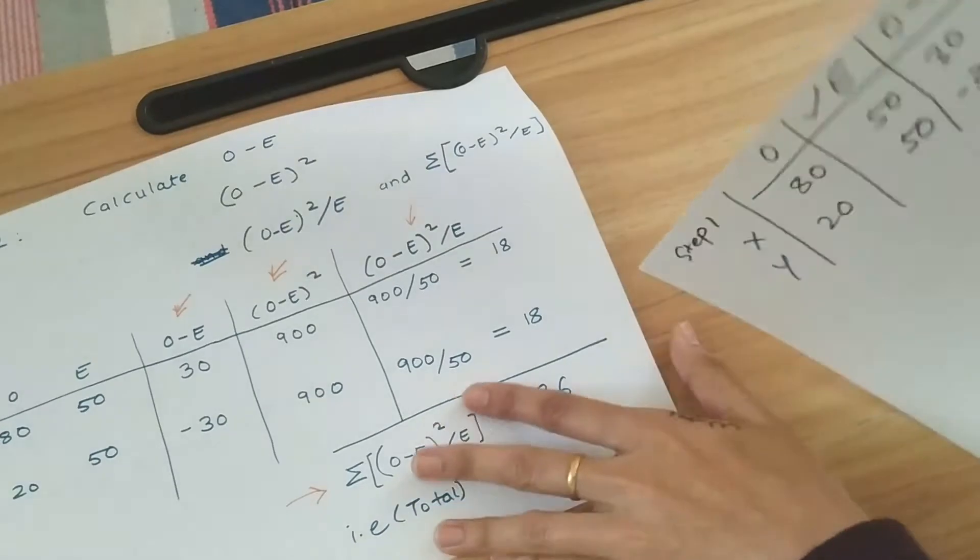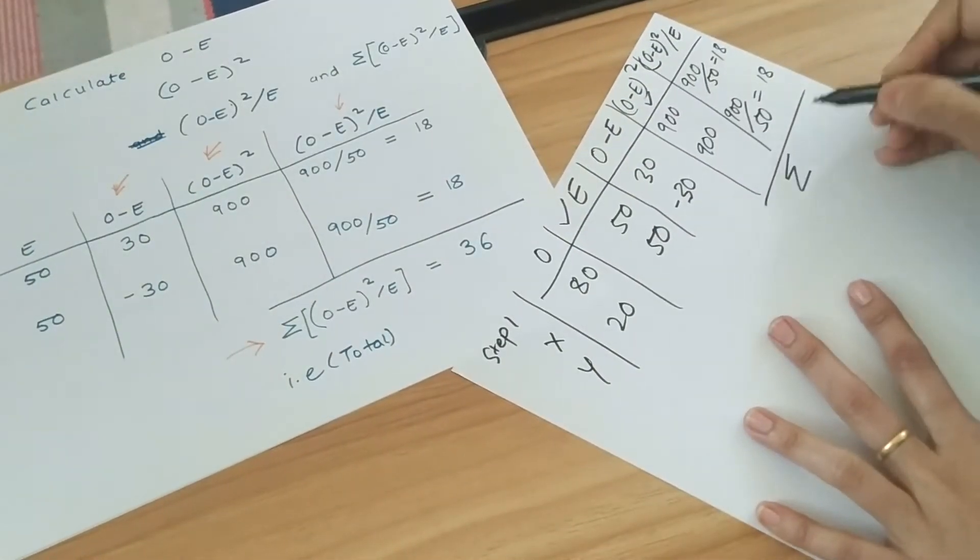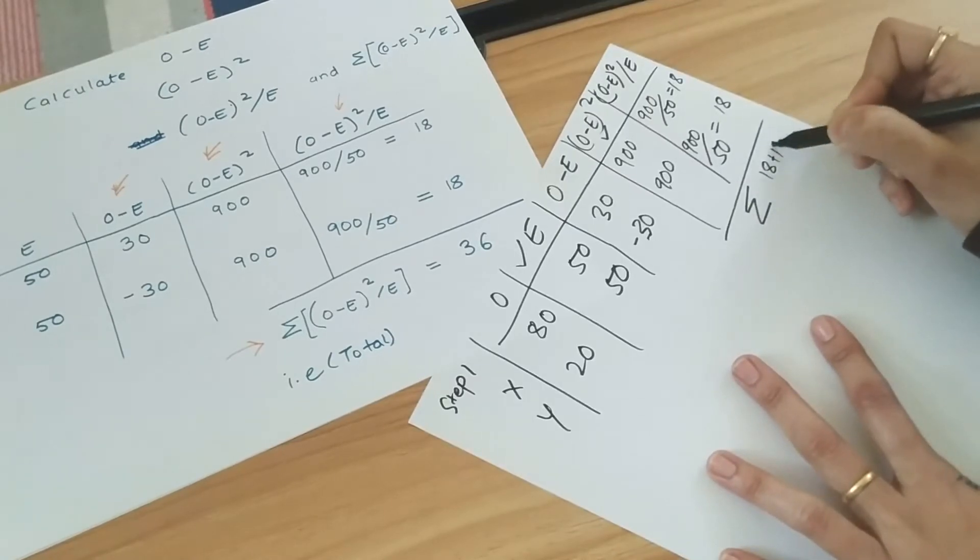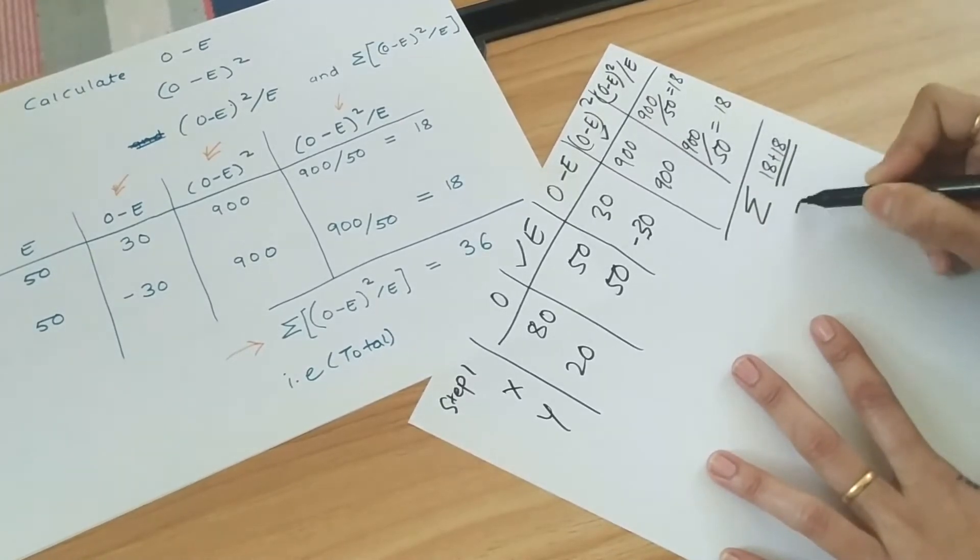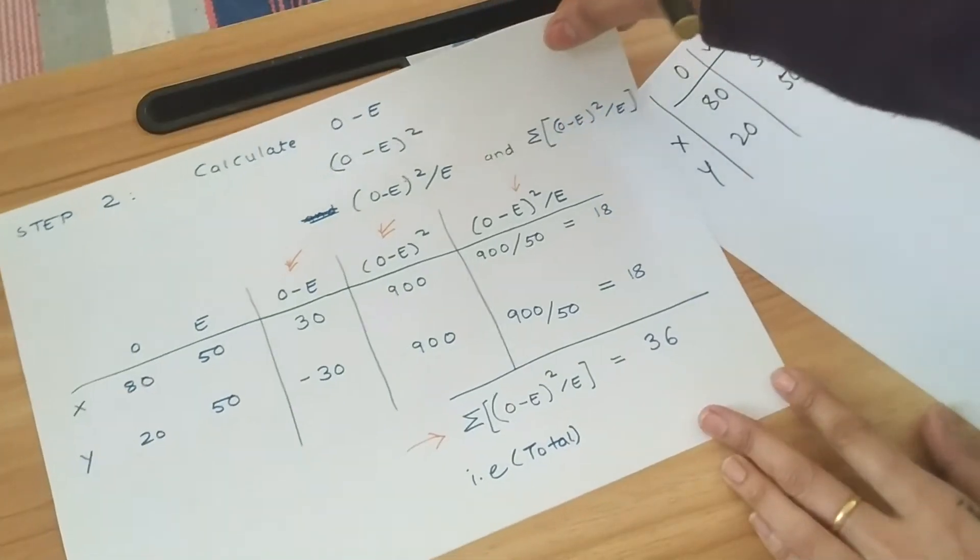Now we need the summation of this column. So sum of this column would be 18 plus 18, that is 36. Now after this value, we have some calculations to make.